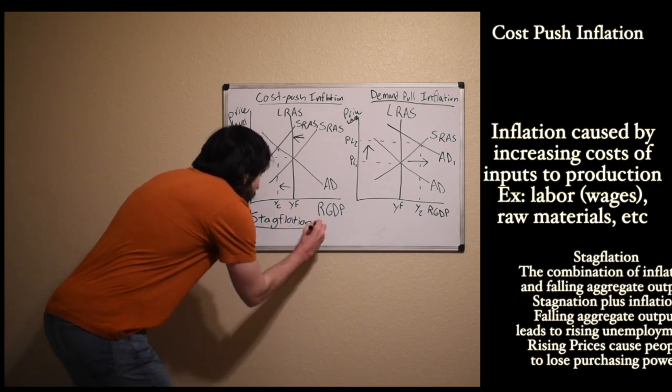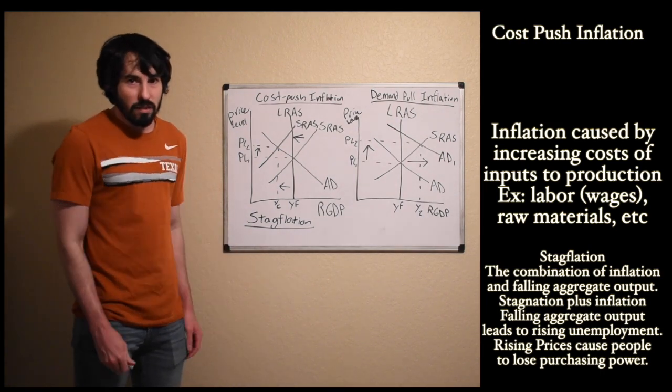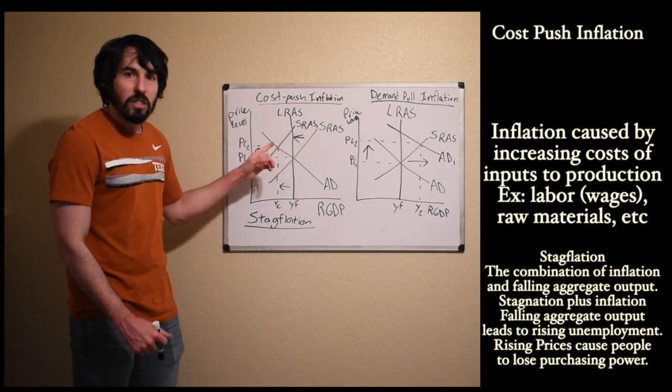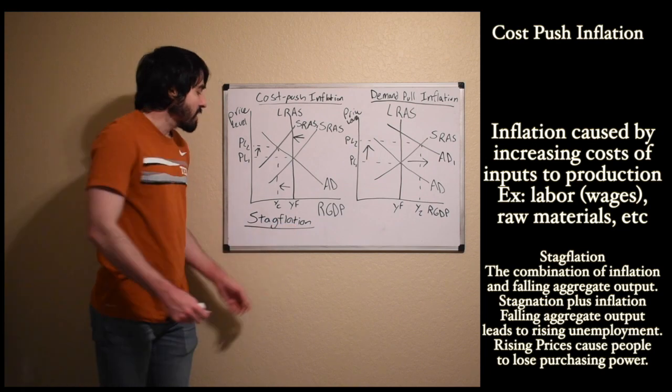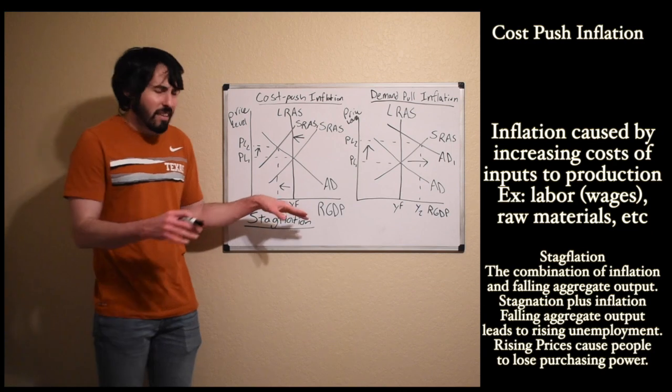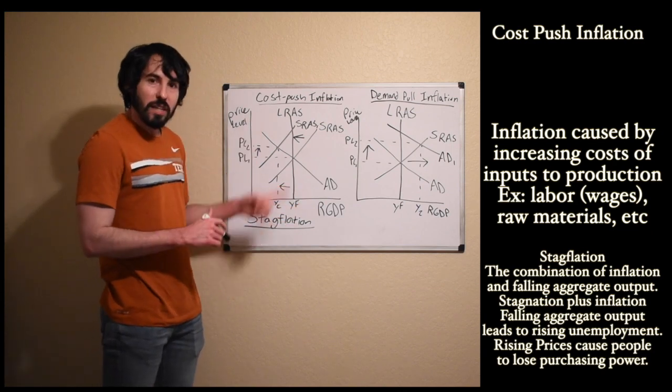Cost push inflation - the economic situation that's so bad they named it twice. So it's cost push inflation, the cost of inputs increases driving up the price of everything. And it's also called stagflation because we're in a recession. The economy has become stagnant, plus inflation because the prices are going up too.